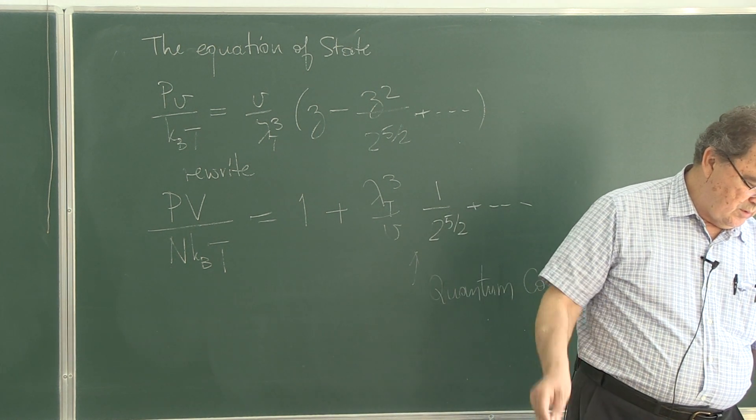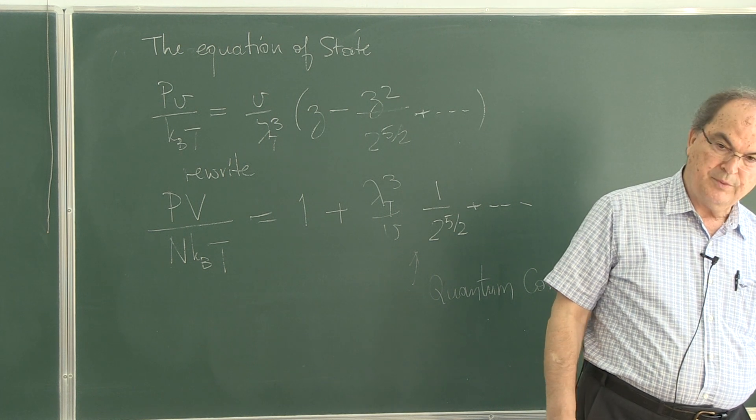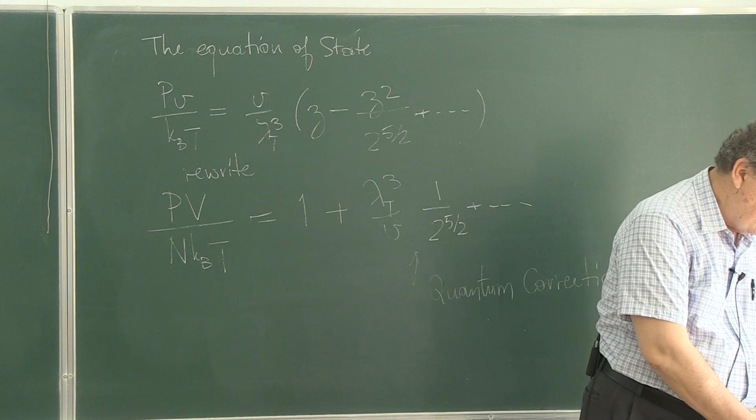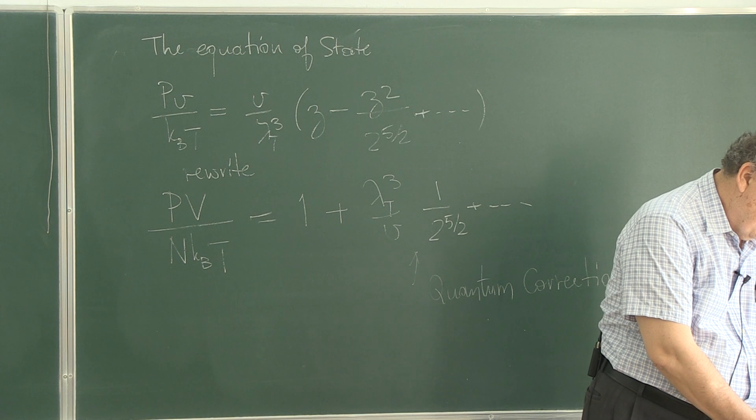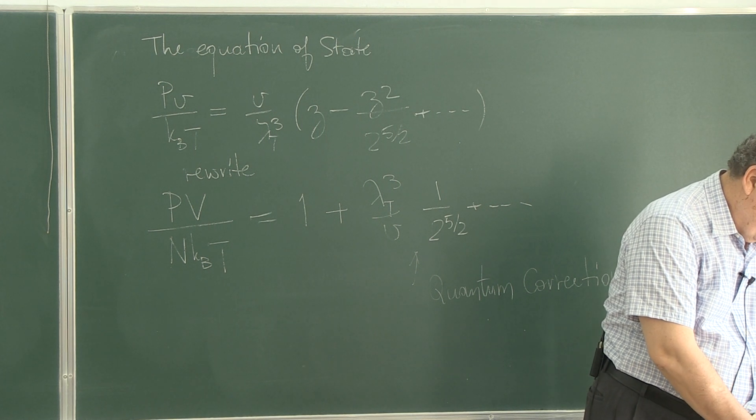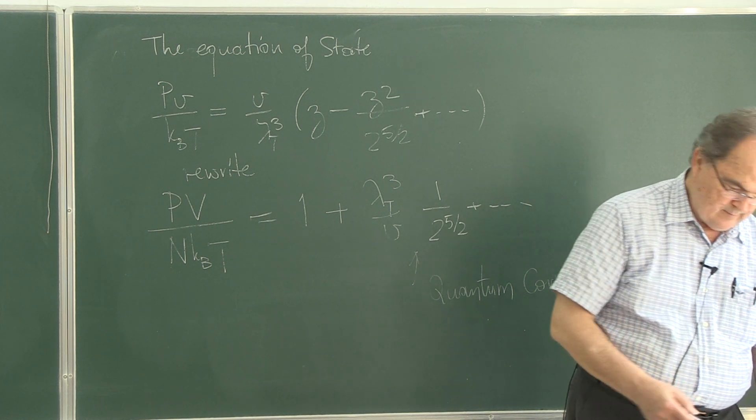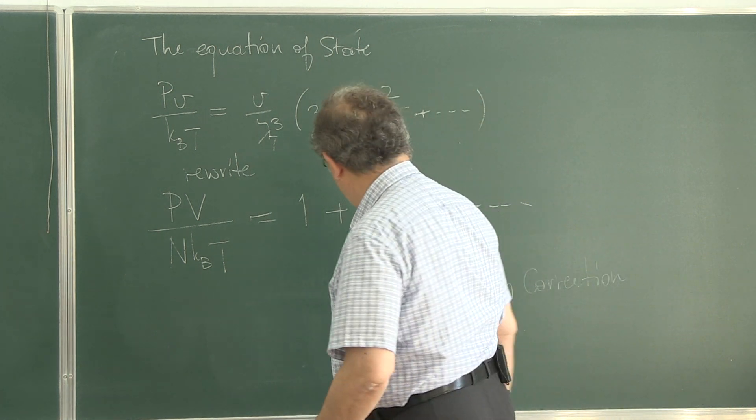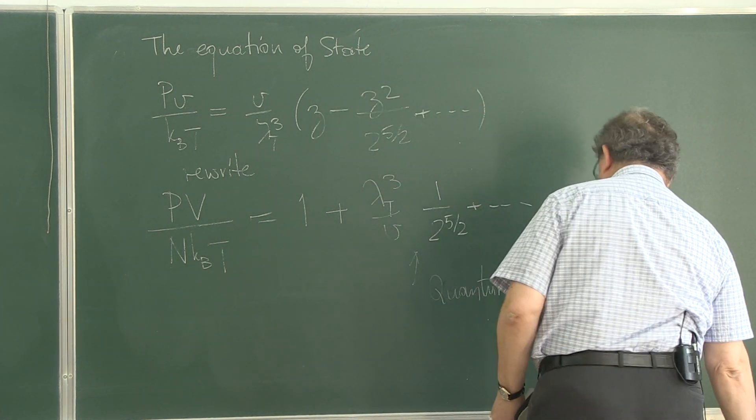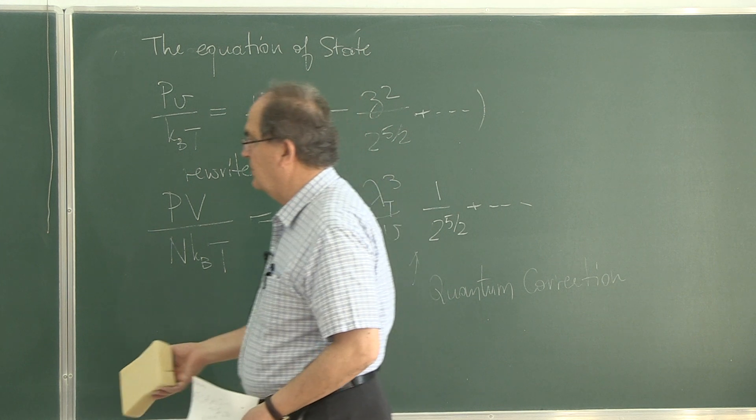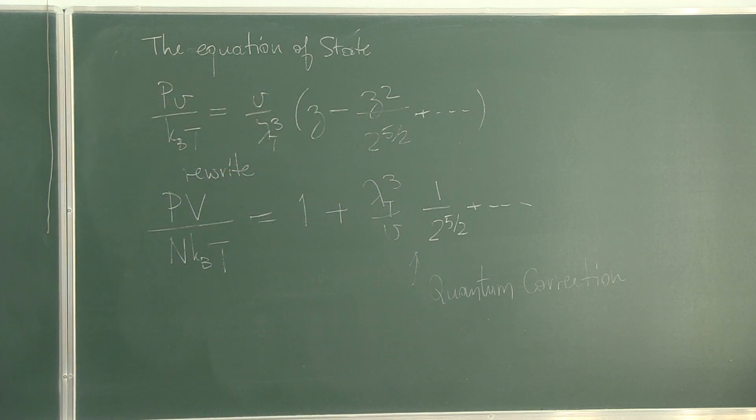Now let's go to the low temperature limit. Again, looking at your notes. Low temperature limit is not the classical limit as in this case. It is the quantum limit. So even in classical limit, you find some quantum corrections.